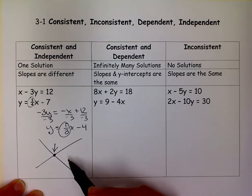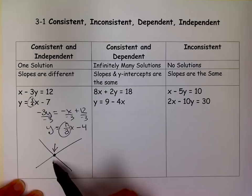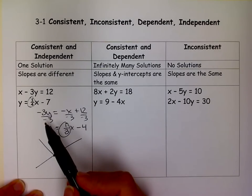And so keep that in mind. Sometimes you don't even have to graph them. If you just see the slopes are different, you know that there's going to be 1 solution.